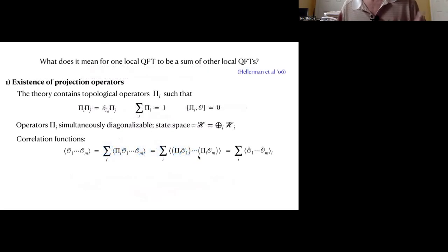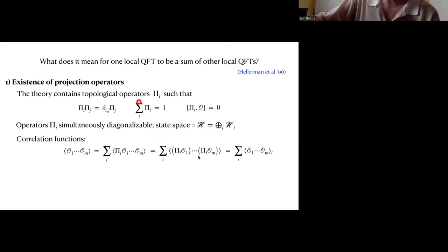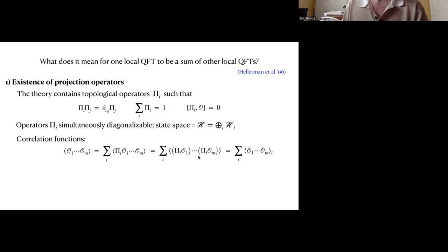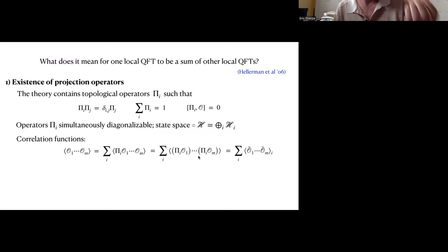What does it actually mean concretely for one field theory to be a sum of others? What can we actually compute to check this? First off, it means that the theory contains some projection operators, which project the states onto the constituent universes. Technically, this means the theory contains a set of topological operators, which I'll denote pi, that commute with everything and act as projectors. They are orthogonal to one another, any projector squares to itself, and they form a complete set. Since the operators are simultaneously diagonalizable, we can diagonalize the state space, write all the states as a sum of eigenspaces of each projector, and as a consequence we can formally write correlation functions as a sum of correlation functions in each of the constituent universes.